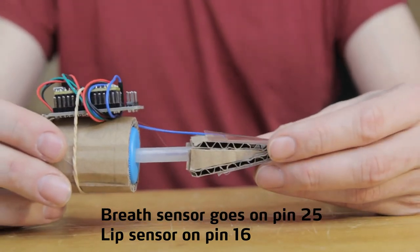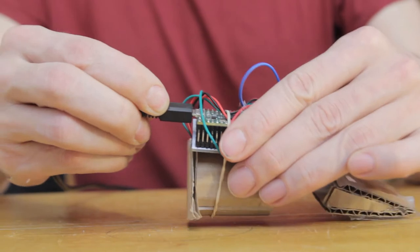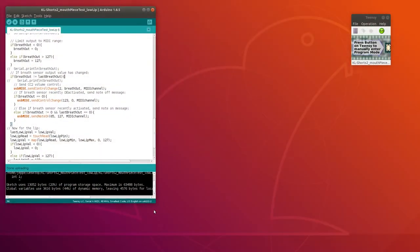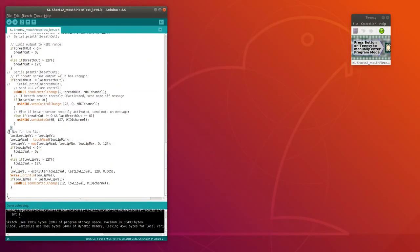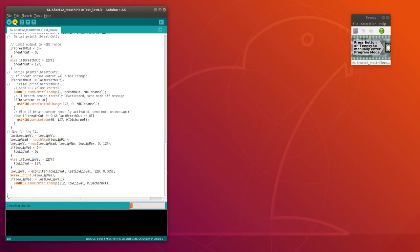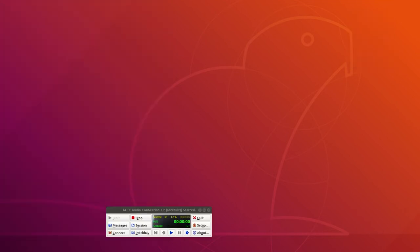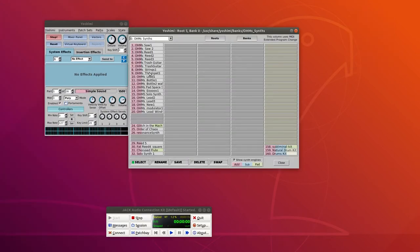And now same as always I'll connect the Teensy to my computer via USB and then upload this new version of the breath sensor sketch from last time which now includes the lip sensor as well. The code for this prototype is on github there's a link in the description. And now I can finally open up my software synthesizer and try it out.